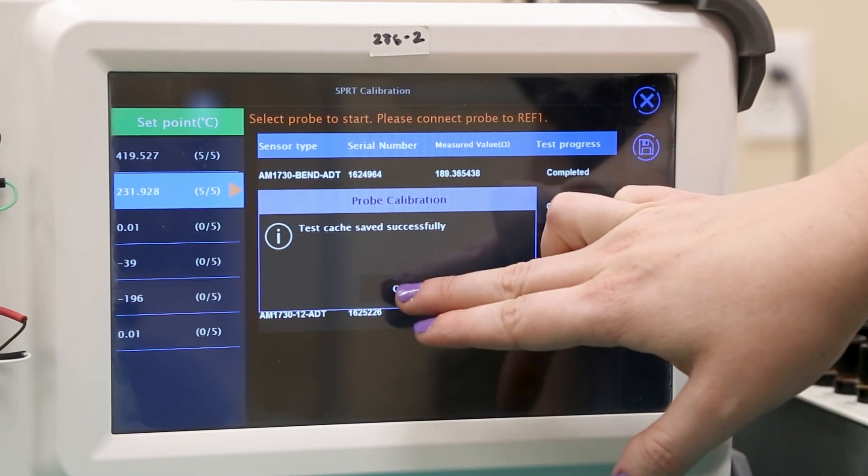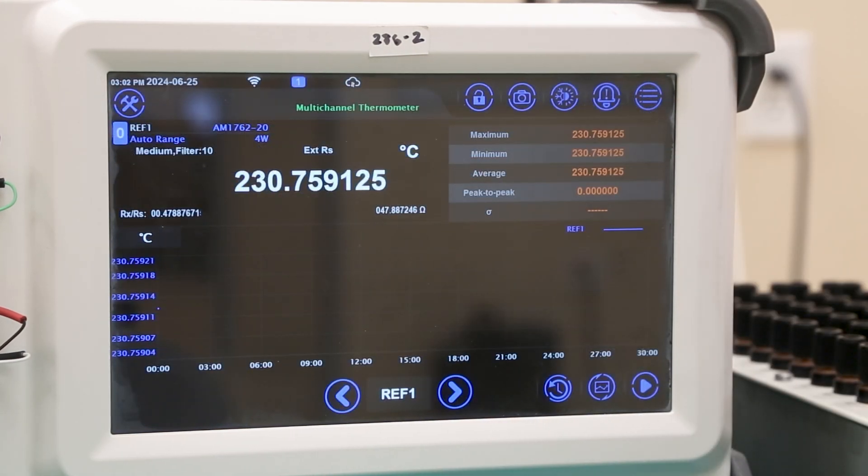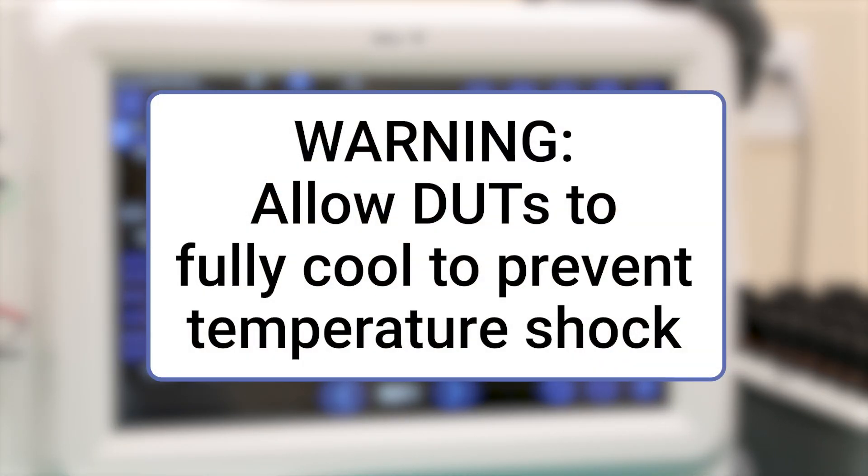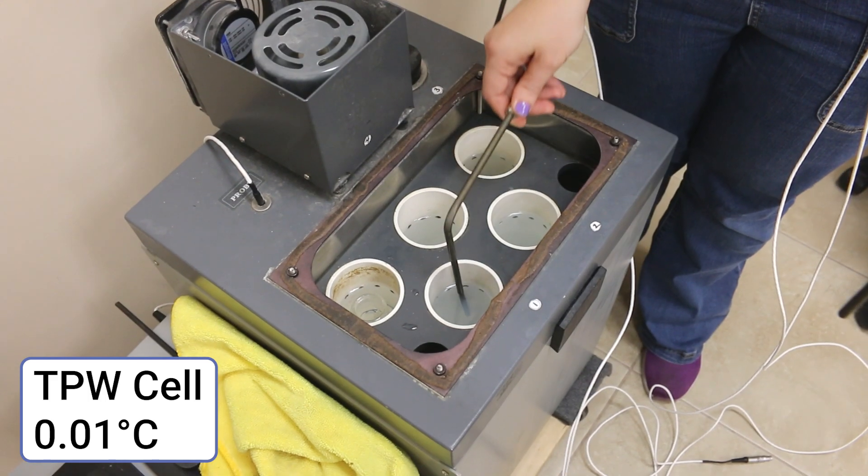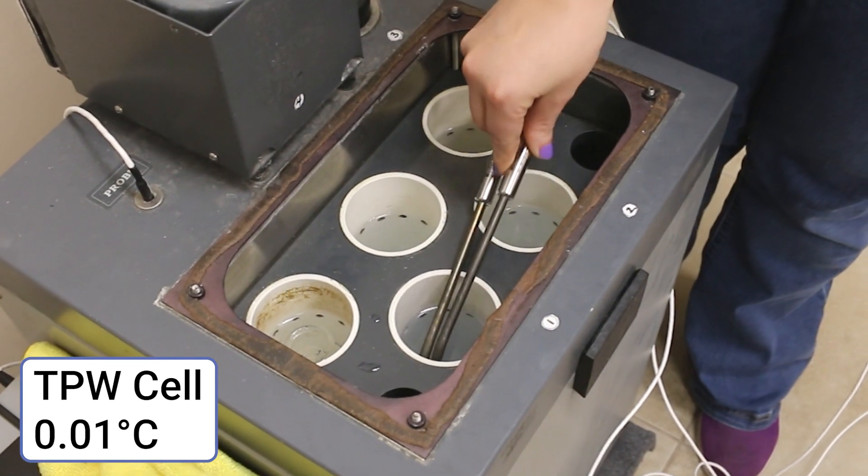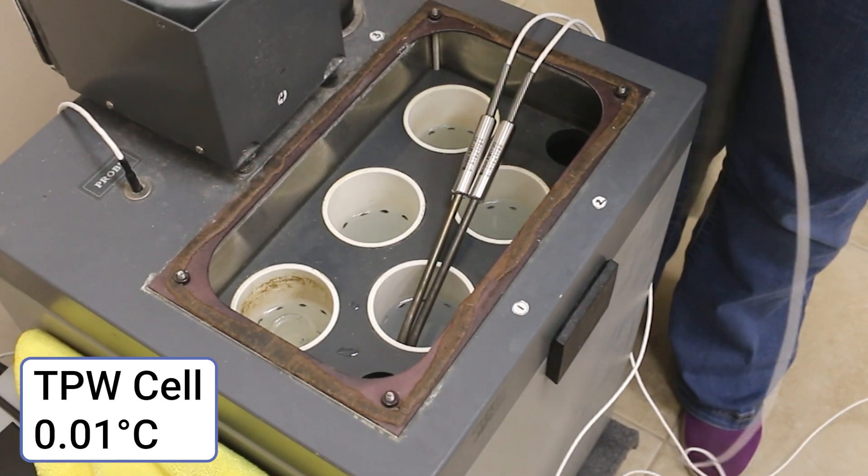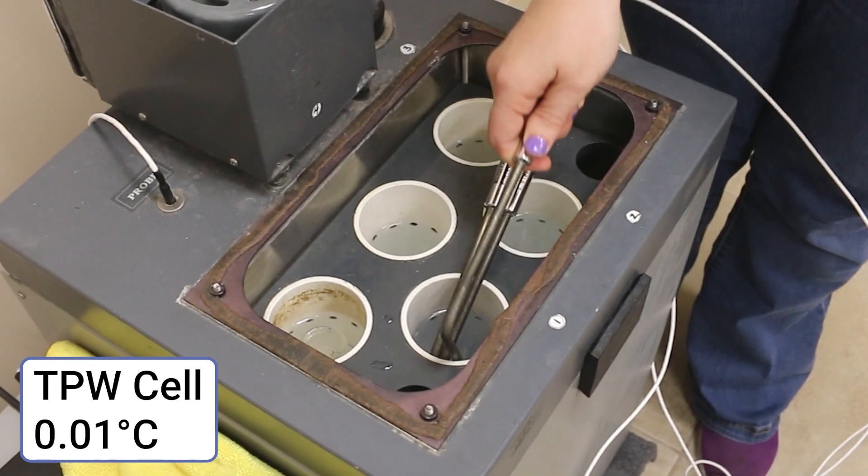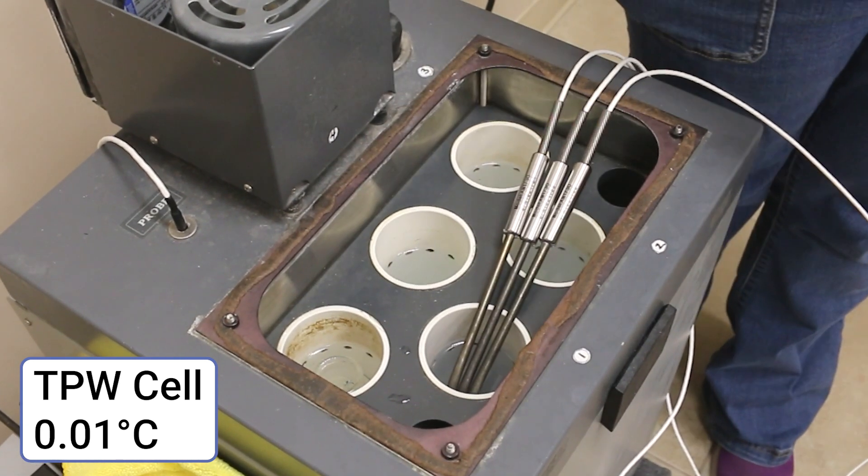Continue measuring probes for the zinc and tin calibration points. Once finished with all five probes, the temperature of each cell should be taken once more with the check standard. Since the next calibration point is the triple point of water with a much lower temperature than the tin freezing point, it's important to allow the probes to fully cool before beginning measurements. Once they have reached room temperature, we will add all five probes to a pre-cooling area in the bath. Since we can confirm the triple point has been reached with the visual inspection of the cell, we don't need a check standard for this calibration point.